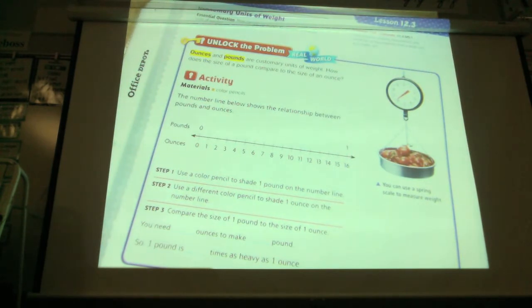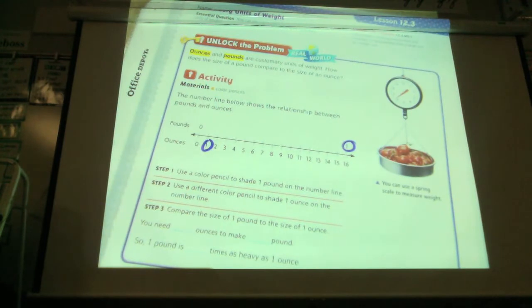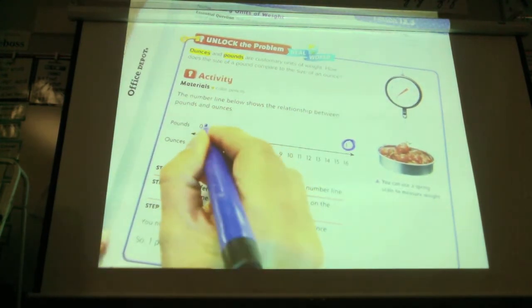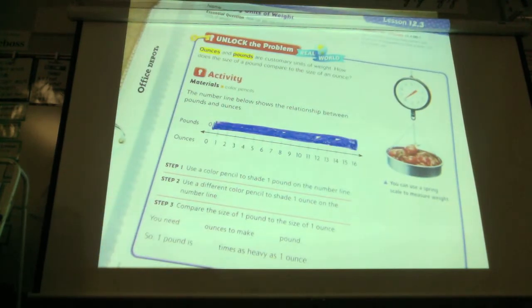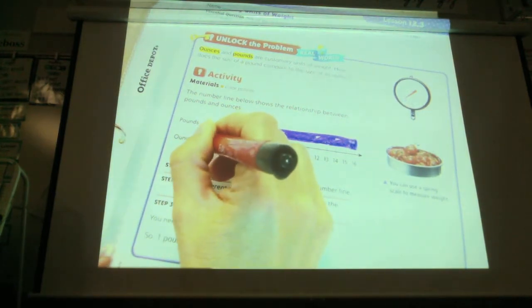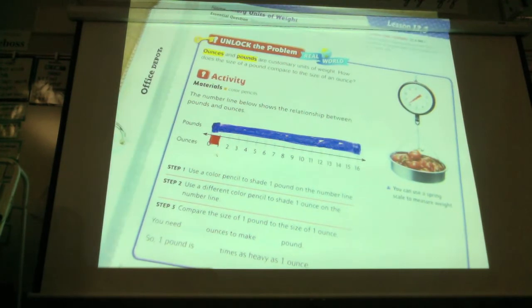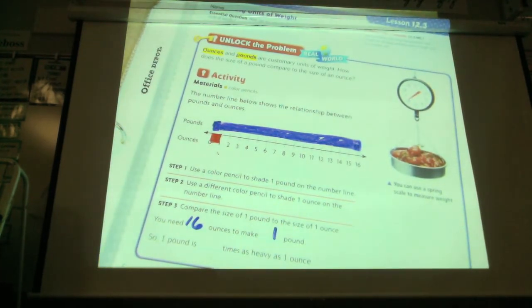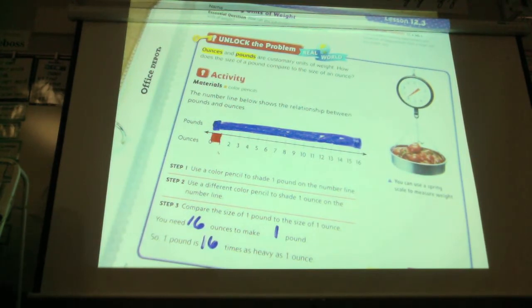So we're going to look at a number line. They've shown what a pound is. Here is one pound and here is one ounce. So I want you to use your pencil, shade one pound on the number line. All the way to a pound and then back and shade. So the next step says, use a different color to shade one ounce. So I'm going to start here. It should go all the way to the zero. And shade one ounce. Compare the size of one pound to the size of one ounce. You need how many ounces to make a pound? We need 16 ounces to make one pound. So one pound is how many times as heavy as an ounce? It's 16 times as heavy as an ounce.